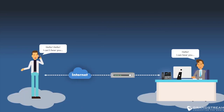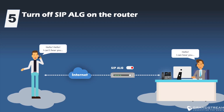A common occurrence in VoIP communication is when there is no audio or one-way audio during an active call — the call is established but one side cannot hear the other. When you have such an issue, the first thing to try is turn off SIP ALG on the router. SIP ALG is a router feature that is usually enabled by default on most home routers, so you will need to log into your router, search for this feature, and disable it.